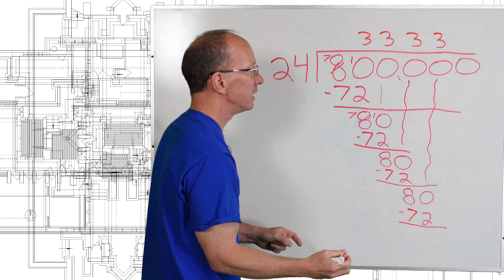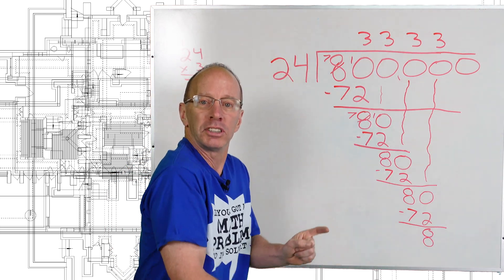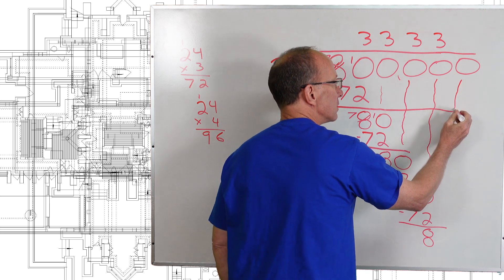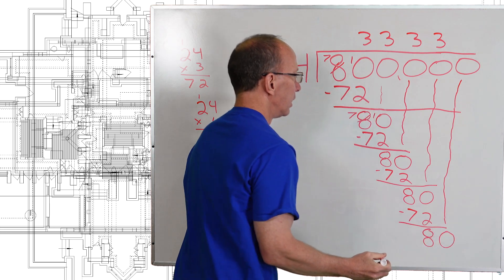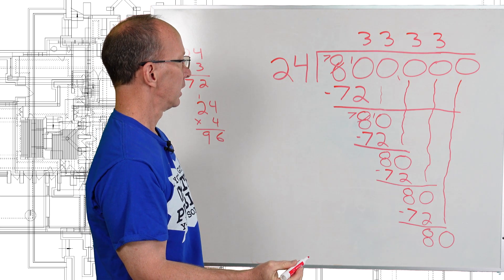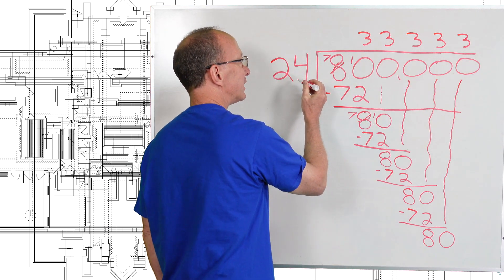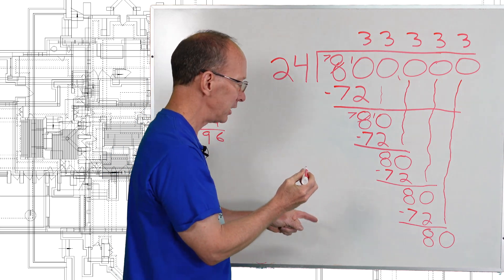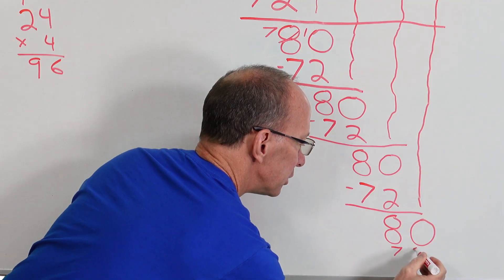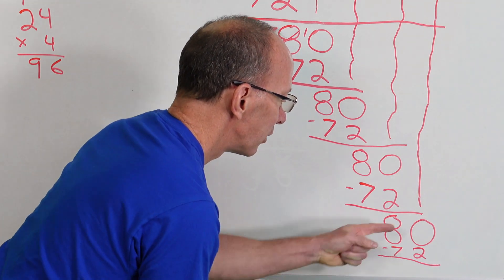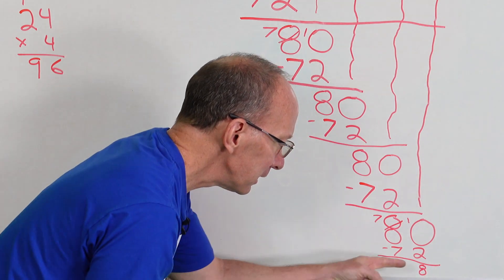Subtract — it's another 8 right here. Drop that next number down, all the way down here. I know the answer to this one again — it's going to be another 3. So I put 3 here. 3 times 24 is going to be 72. And I'm sorry about this — you've got to zoom in here because I'm running out of board space. 72 subtract. And it's going to be — you guys know what it's going to be — got to borrow here. It's going to be an 8. A little tiny 8.